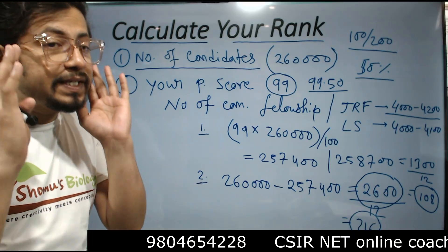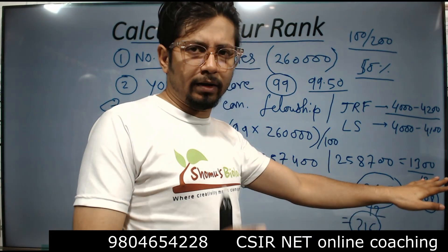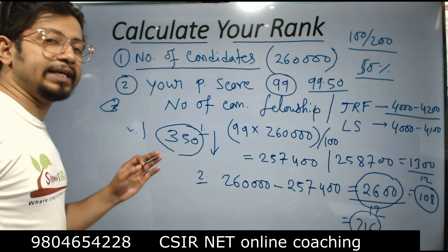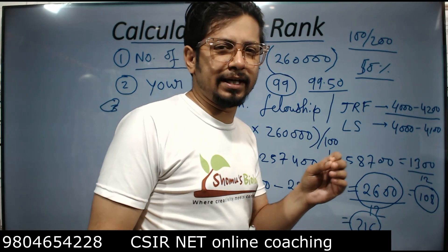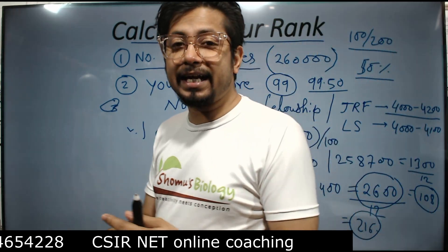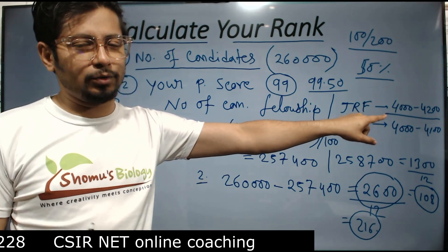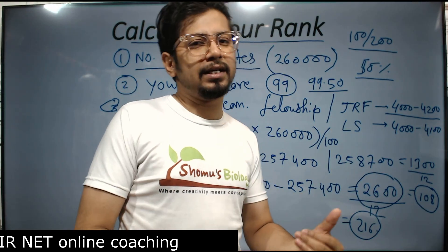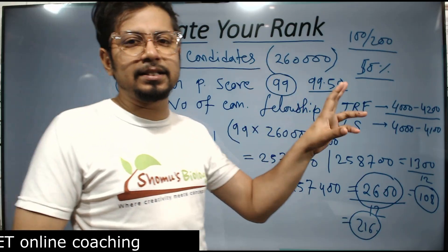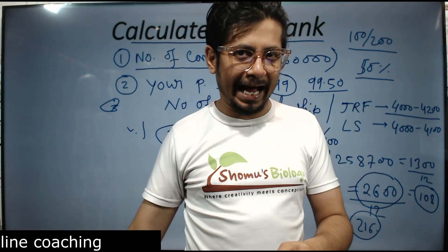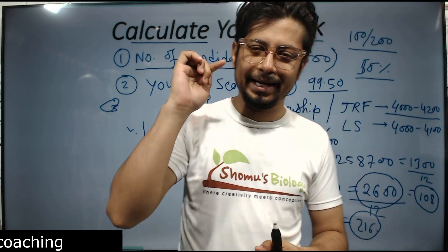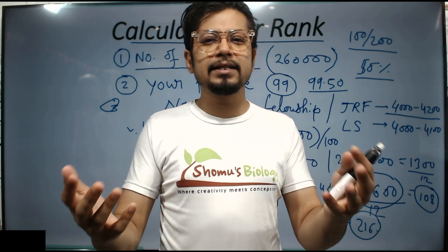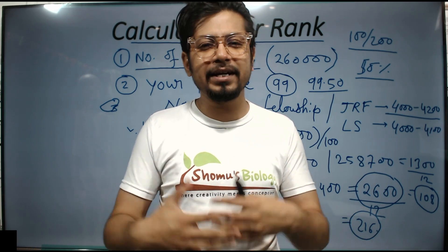If using this method — with 12 students per rank — your rank comes out below 350, then you can think there is a chance you may qualify. But if CSIR or UGC provides fellowship to fewer students, this rank won't hold; if they provide to more students, it's favorable for you. That's the simple idea of converting a percentile score into a rank. You can share this video with your friends so everyone knows this method to predict their approximate rank.